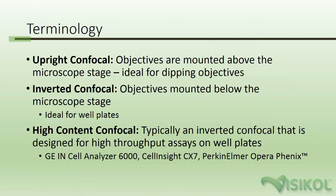Before we get started, it is important to understand the different types of confocal microscopes and how they are used to image cleared tissues. Confocal microscopes can generally be grouped into three categories: upright confocal microscopes, inverted confocal microscopes, and high-content confocal microscopes.